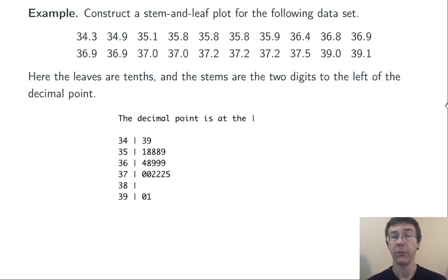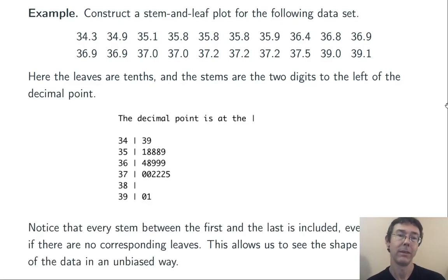Here's the whole thing. 34 slash 3, and then 34 slash 9, and so on. Notice that every stem in between the first and the last is included, even if there are no corresponding leaves. So here I'm looking at the stem that starts with 3.8. This allows us to see the shape of the data in an unbiased way. The 39.0 and 39.1 are not right next to 37.5, for instance. There's a little space in between.